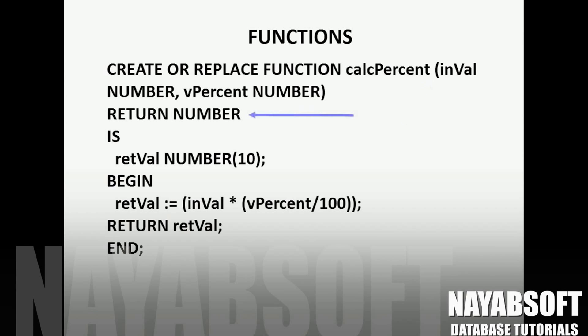In the return clause we are specifying the return data type, which is number in this case. After the IS clause we are declaring a variable of number data type.